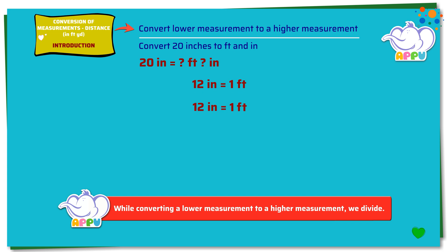Dividing both sides by 12, we get 12 inches divided by 12 equals 1 foot divided by 12. 12 divides 12 once. Now we get 1 inch equals 1 foot divided by 12.